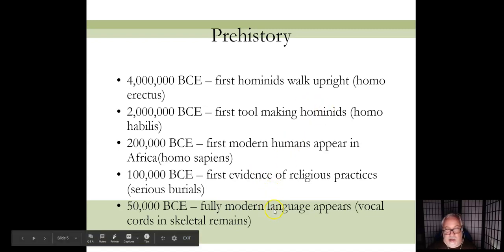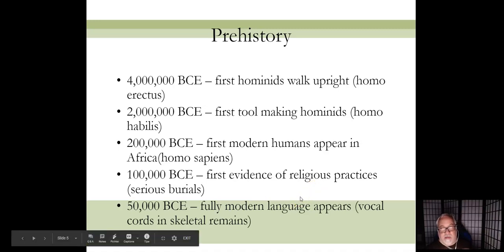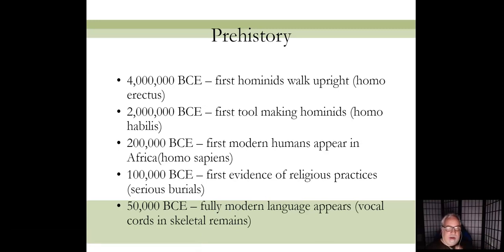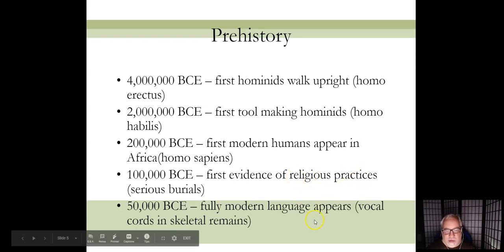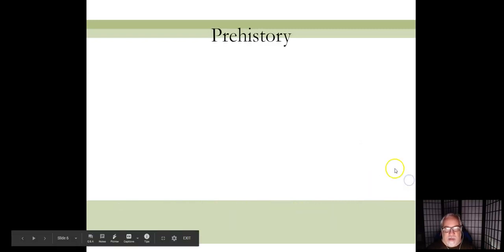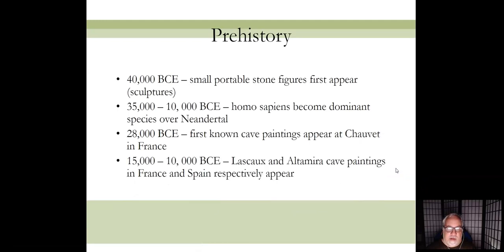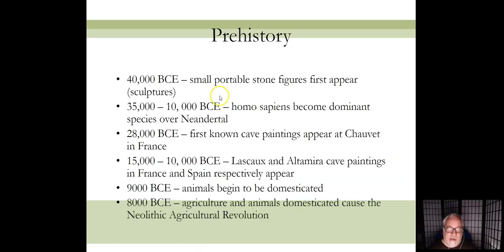The next big step in evolution is the development of language. We know this because skeletal remains show the first vocal cords capable of speech. Ancient humans could make sounds, but they couldn't make speech — they couldn't produce the full range of sounds. You could basically grunt at each other prior to this development.